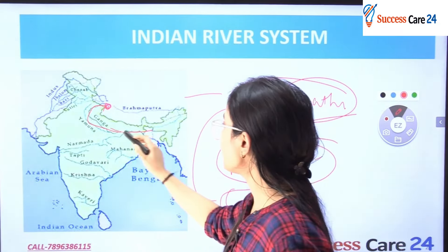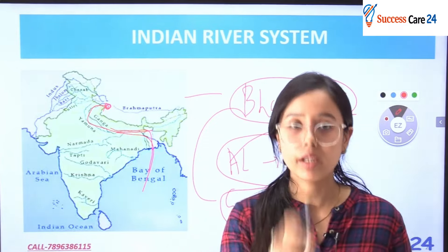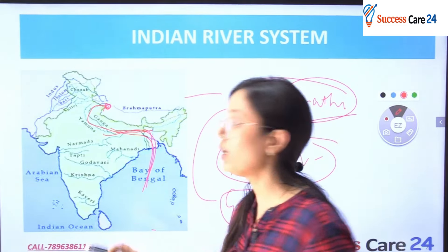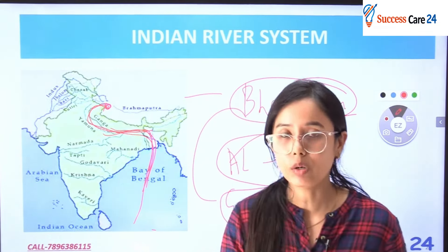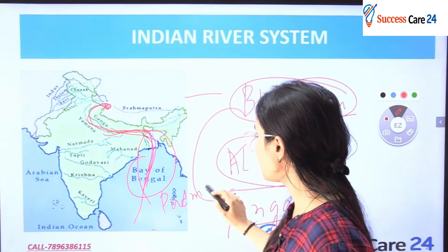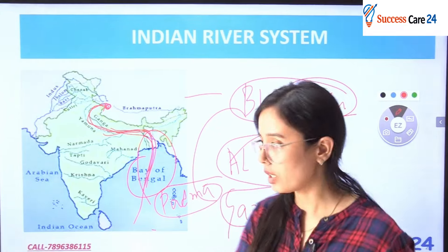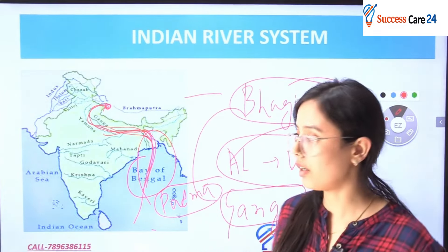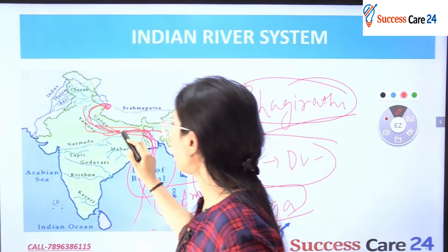From Haridwar, the Ganga flows like this and drains into the Bay of Bengal. Most rivers in India flow into the Bay of Bengal, while only some flow into the Arabian Sea. When the Ganga enters Bangladesh, its name changes to Padma. The Yamuna is the longest tributary of Ganga; it also originates from a glacier and flows parallel to the Ganga.